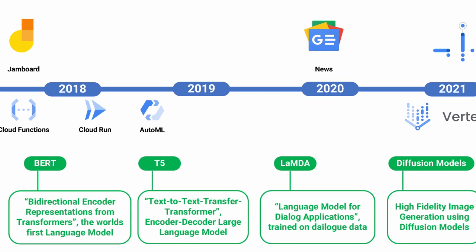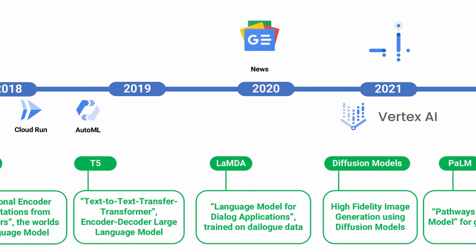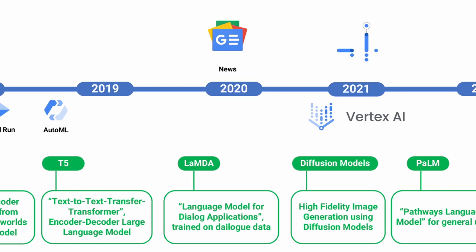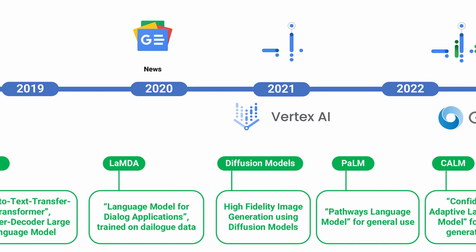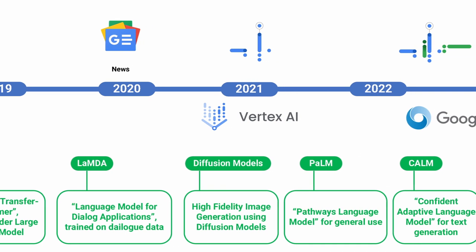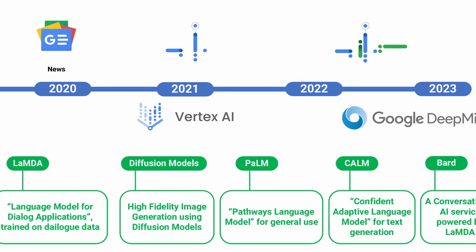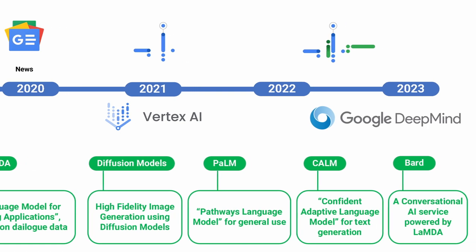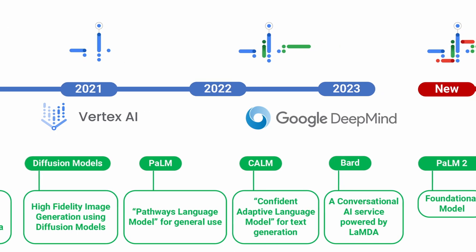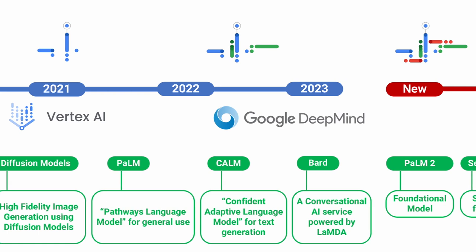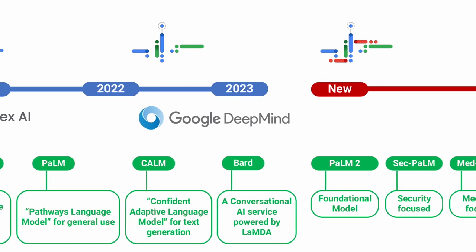Moving on to LaMDA, the Language Model for Dialogue Applications, which is specifically trained on dialogue data. In 2021 we have Vertex AI and high-fidelity image generation using diffusion models. And PaLM, the Pathways Language Model for general use. Followed by CALM, the Confident Adaptive Language Model for text generation. And also Bard, a conversational AI service powered by LaMDA. And the joining of the Google Brain and DeepMind teams in 2023 to create Google DeepMind.